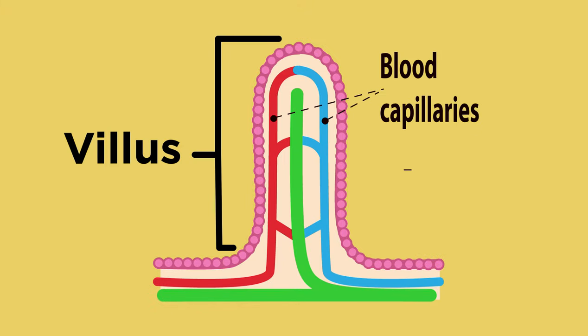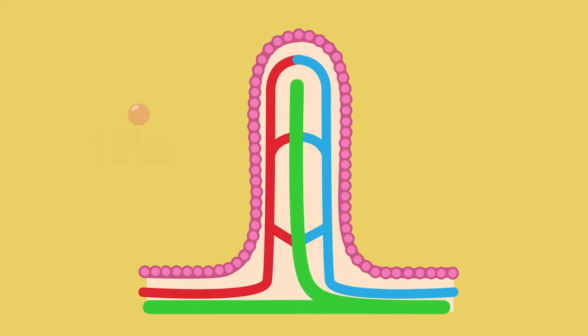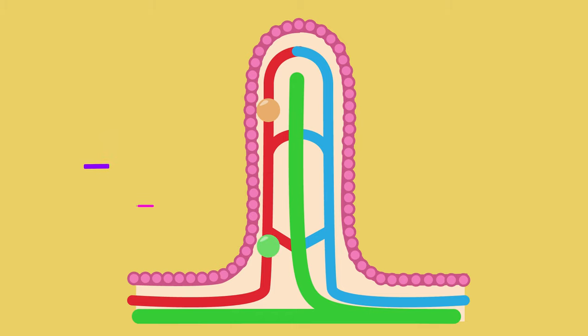Each villus has a tiny blood vessel called a capillary and another vessel called a lacteal. The food molecules pass from the villi of the small intestine into either the blood capillary or the lacteal. Once absorbed into the blood vessel in the small intestine, the digested food molecules can then be transported around the body to where they are needed.